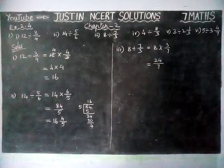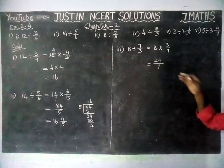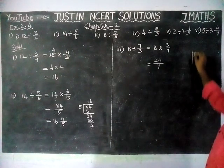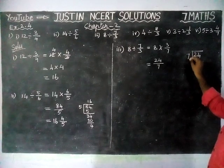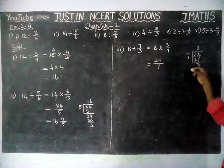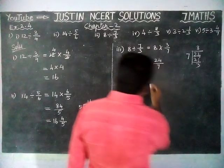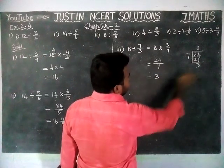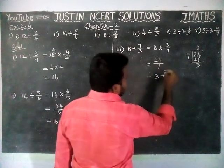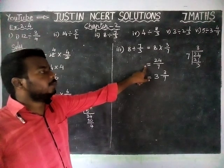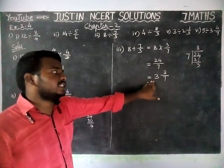And if it is possible to convert into mixed fraction, we can convert. This is an improper fraction, so we are going to convert it. 24 divided by 7: we have 3 sevens are 21, remainder 3. So the quotient comes in the whole part: 3, and remainder 3 over divisor 7. The answer is 3 and 3/7. We can stop here itself, but they have also converted into mixed fraction.